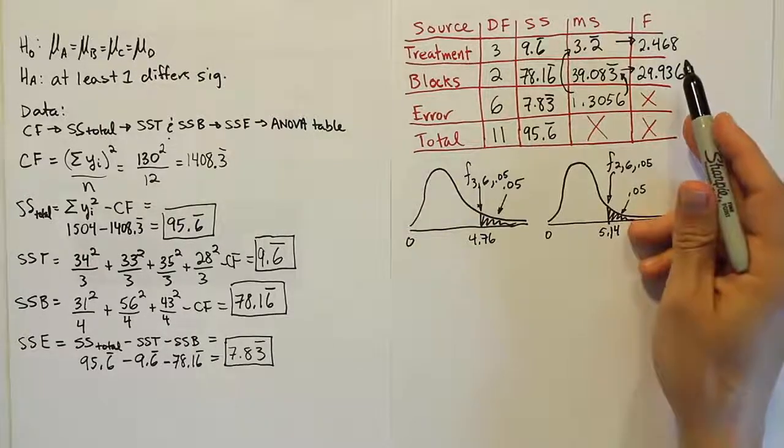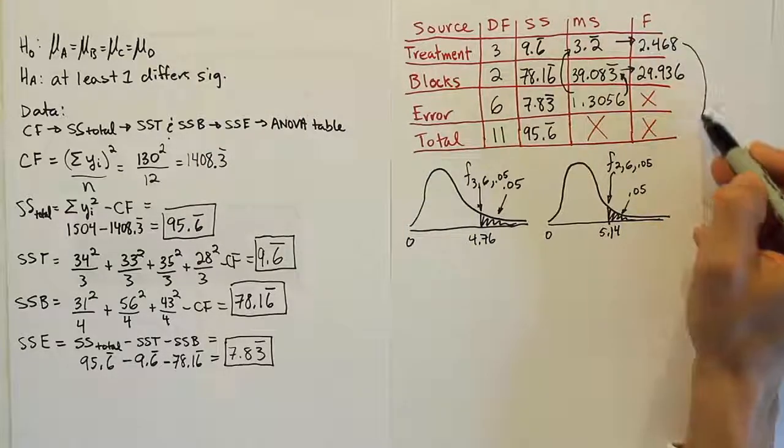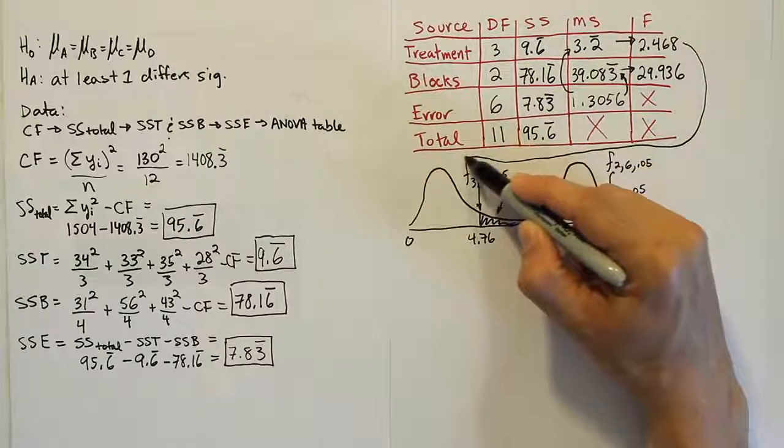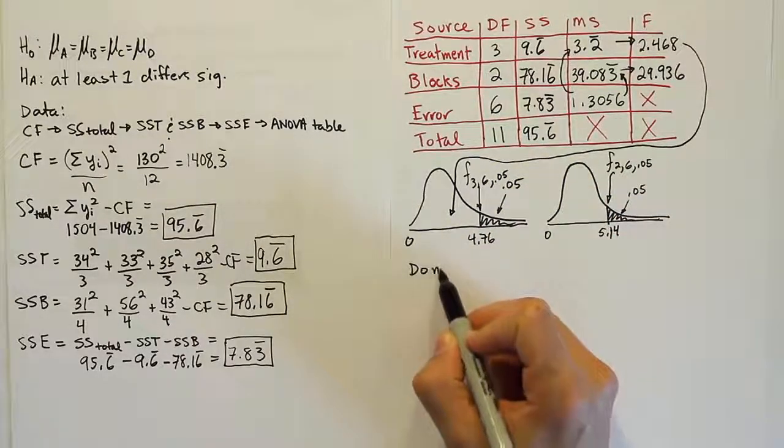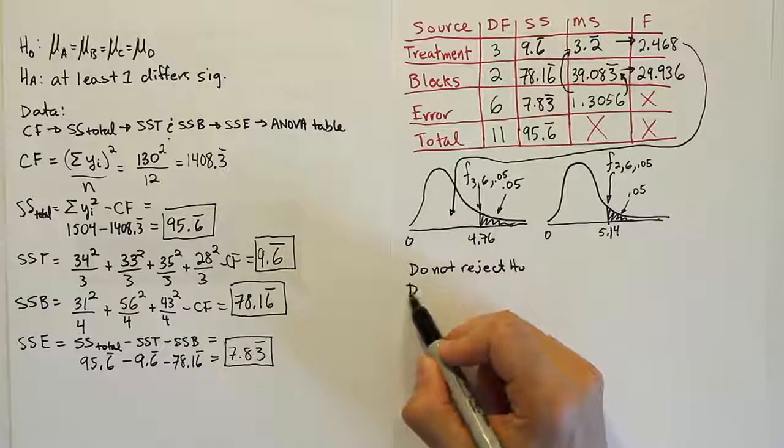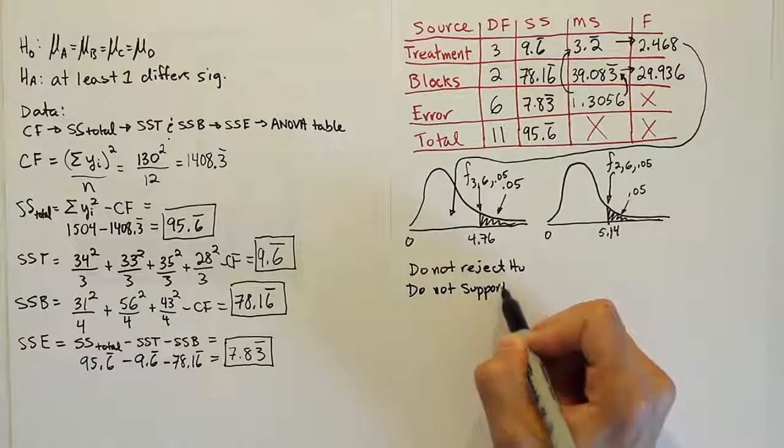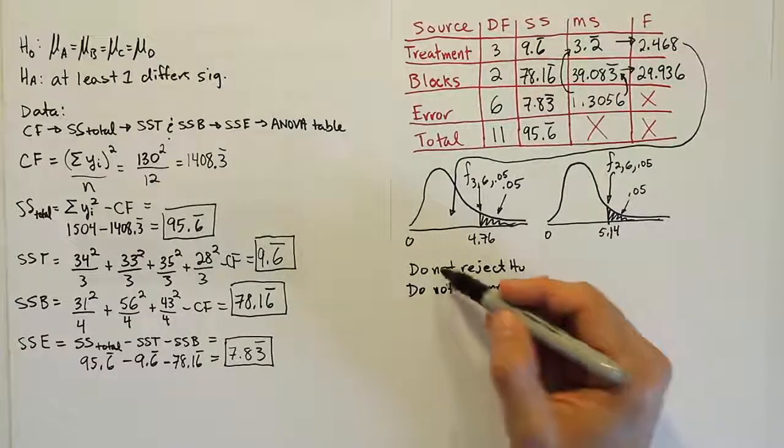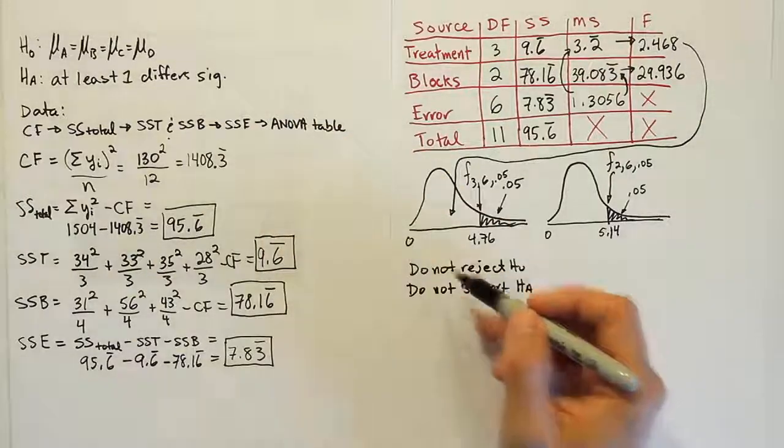And when we look at our test stats, we see that the F test stat for treatments falls short of the rejection region. In other words, it lands over here, so we do not reject H0, and therefore, we do not support HA. So, this is for the treatments, for this set of hypotheses.